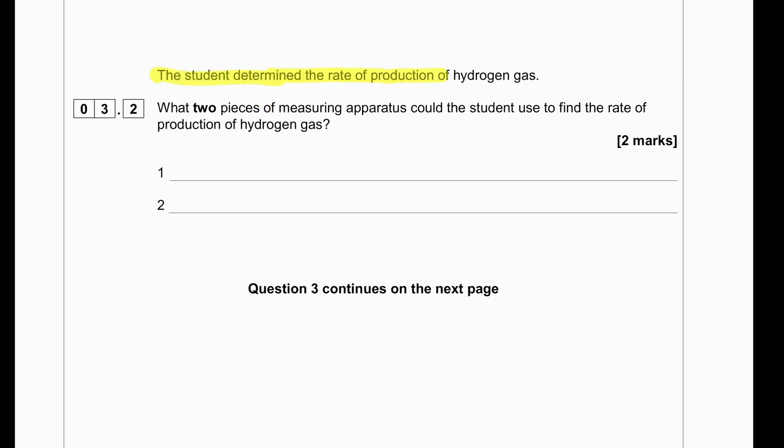The student determined the rate of production of hydrogen gas. Which two pieces of measuring apparatus could the student use to find the rate of production of hydrogen gas? So in order to find the rate of hydrogen gas, a gas syringe and along with a stopwatch will be necessary.